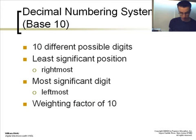In the decimal numbering system, each position contains 10 different possible digits. These digits are 0, 1, 2, 3, 4, 5, 6, 7, 8, and 9. Each position in a multi-digit number will have a weighting factor based on the power of 10.